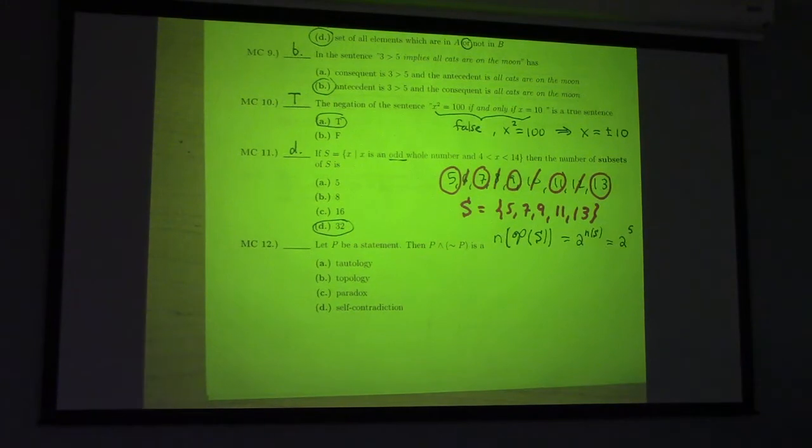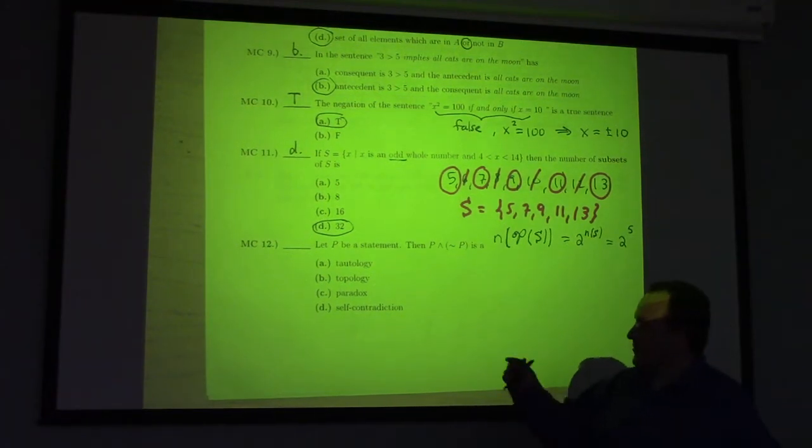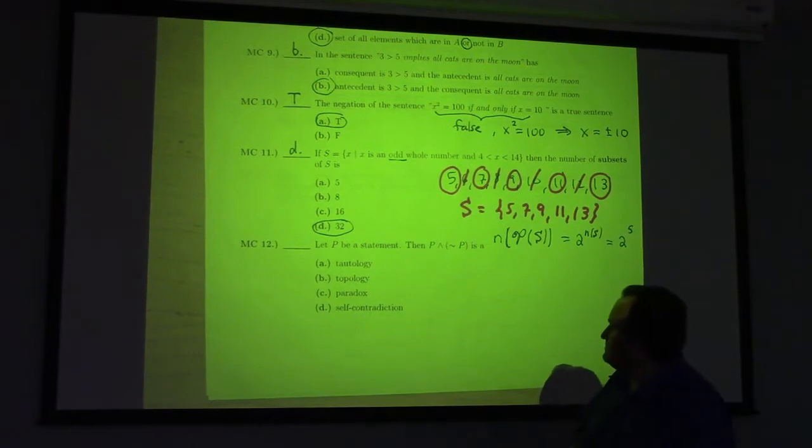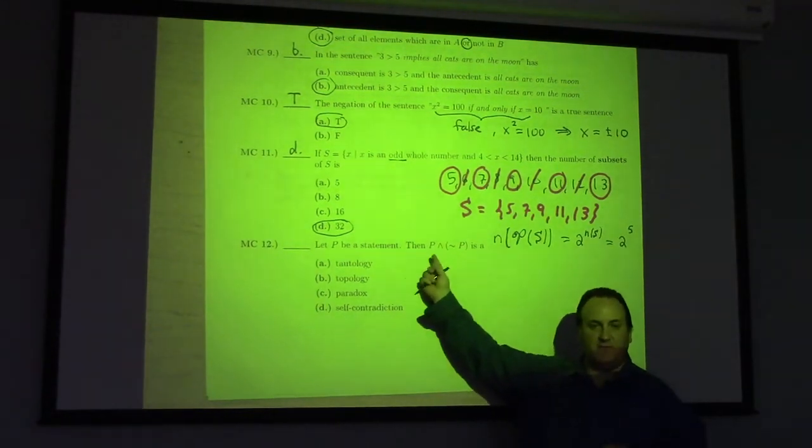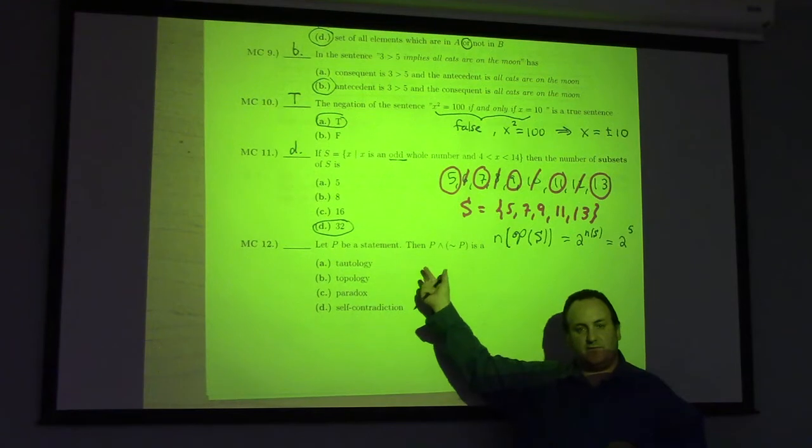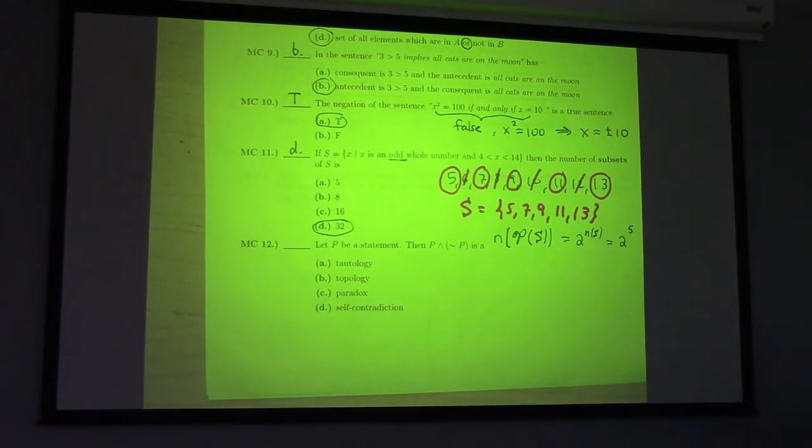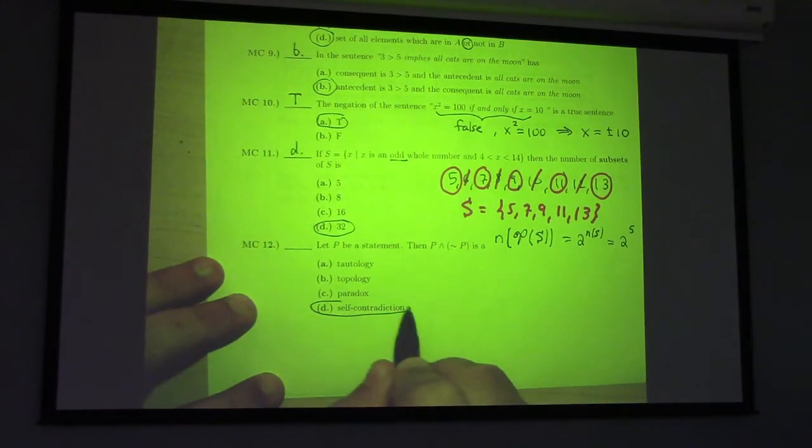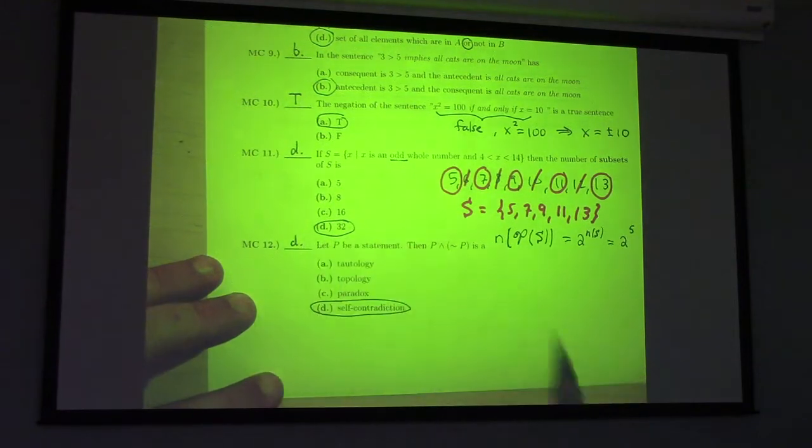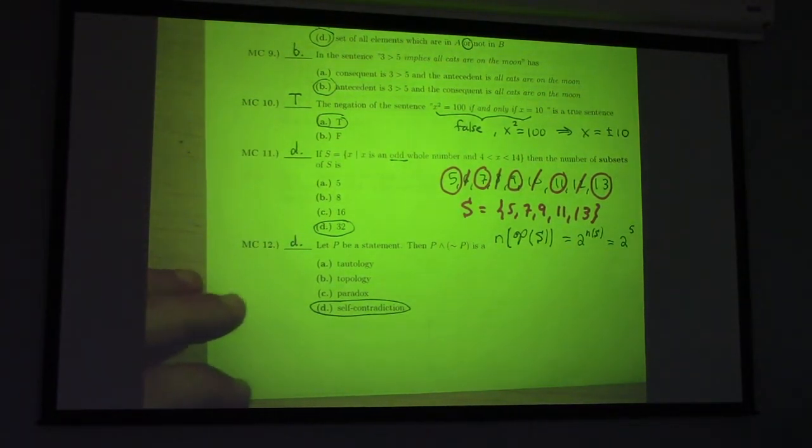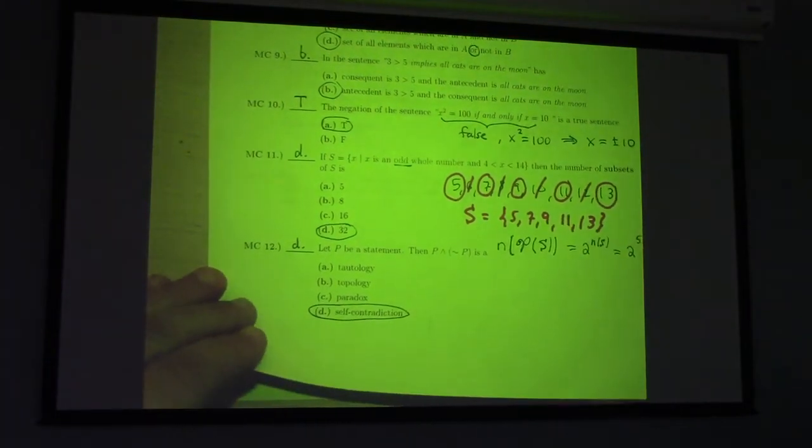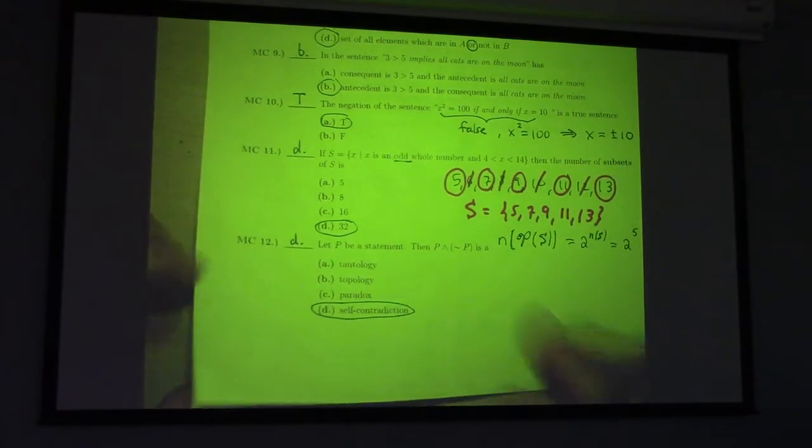How about number twelve? It is a self-contradiction, right? Because if P is true, we have true and false. If P is false, we have false and true. Either way, true and false or false and true, these are both false with the and statement. So, it's always false. It is a self-contradiction. What's a paradox, by the way? It's a seeming contradiction. We don't really have room for seeming things in logic.